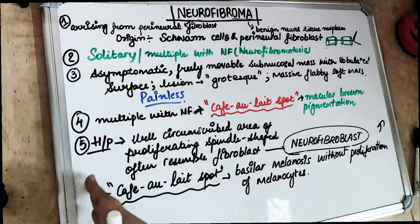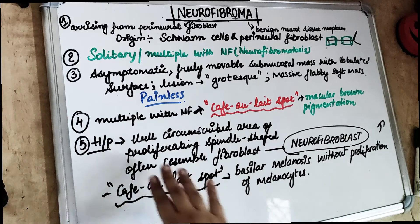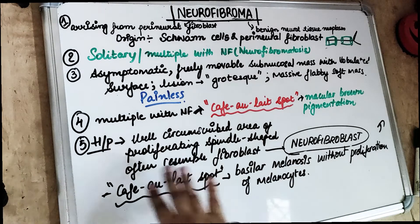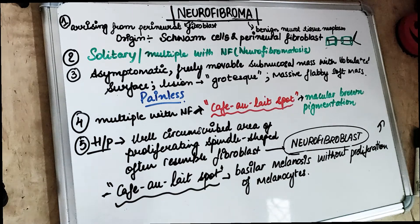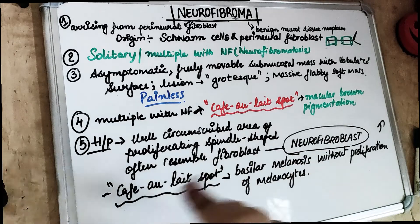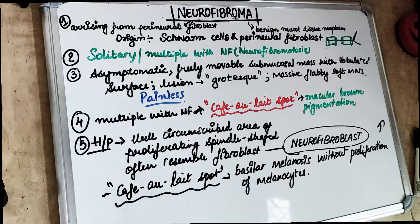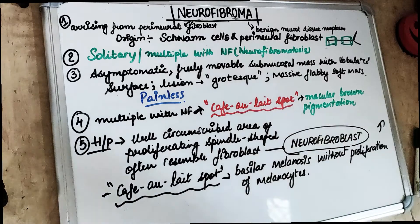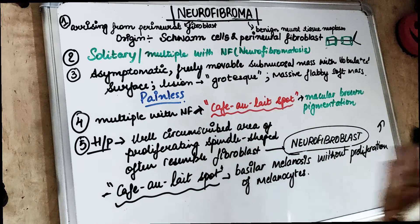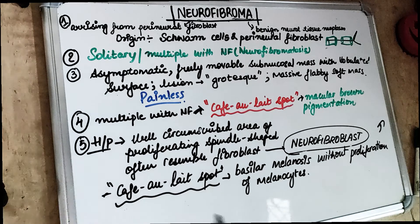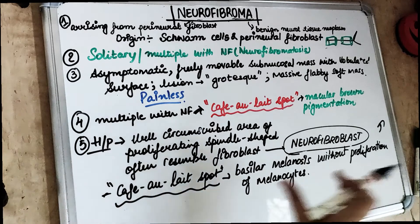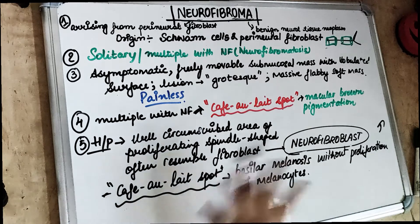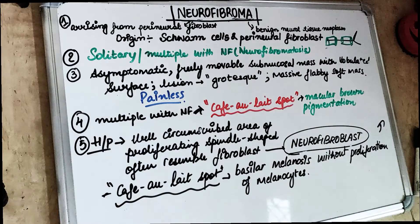On histopathological examination, we see a well-circumscribed area of proliferating neurofibroblastic cells — proliferating spindle-shaped cells which often resemble fibroblasts. There is excessive proliferation of the neurofibroblasts. In the case of café-au-lait spot pigmentation, there is basilar melanosis without any proliferation of melanocytes.